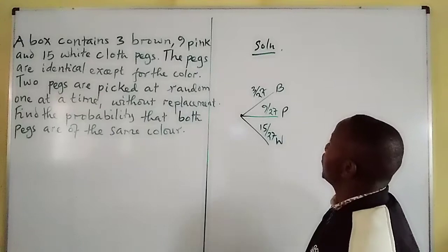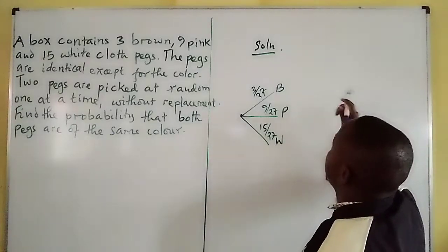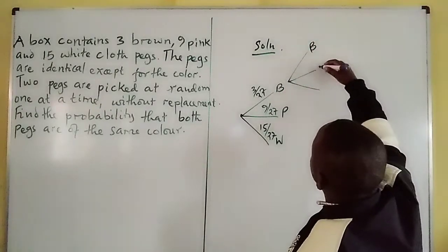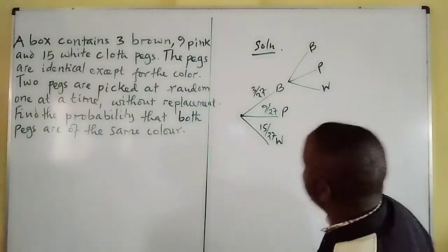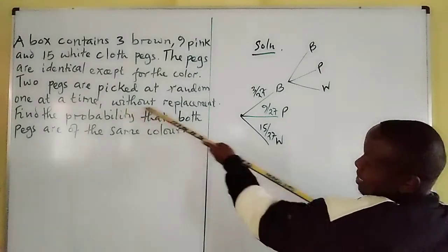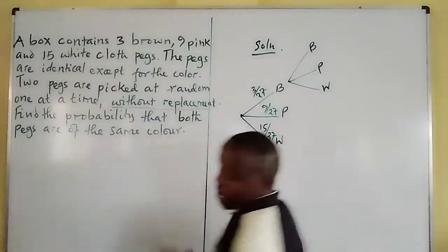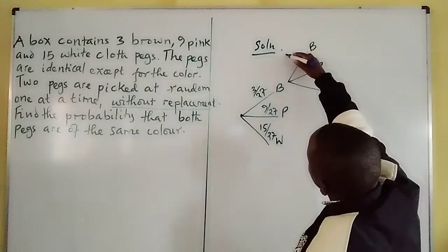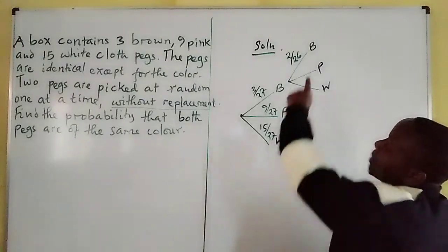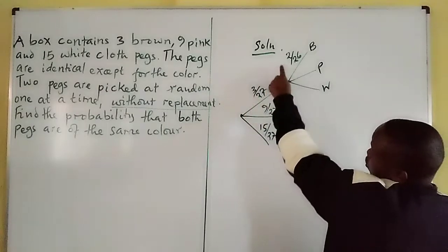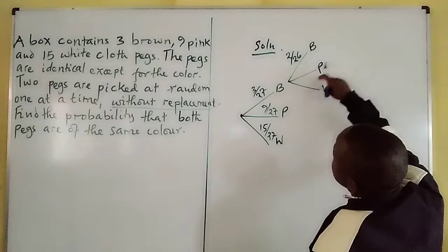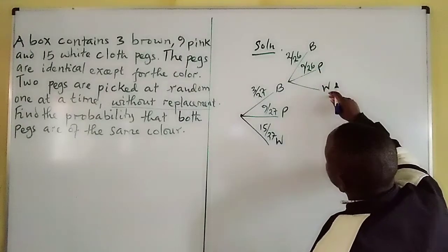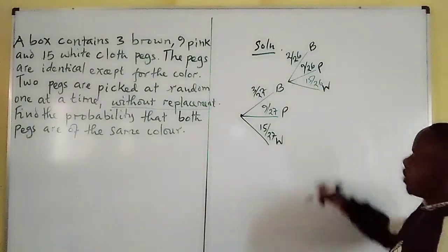Now we go for the second event. If you had picked brown, you can still pick brown again, or pink, or white. Because there is no replacement, if we had picked a brown one, then picking brown again goes down to 2 out of 26. So brown is now 2 and the total has become 26. Pink has not been affected, so pink remains 9 out of 26, and white remains 15 out of 26.